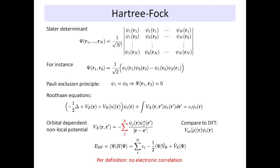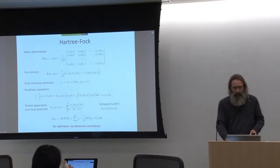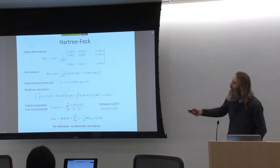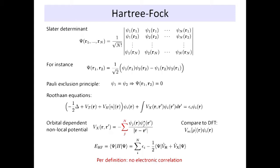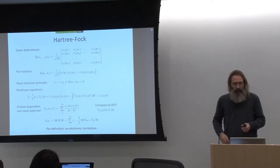We can write our many-body wave function as a Slater determinant that involves these one-electron functions that we saw yesterday. This has a few interesting properties. One of the properties is that it includes the Pauli exclusion principle in a natural manner — no two electrons of the same spin can occupy the same orbital. So if you put two electrons with the same spin in the same orbital, this will be essentially zero.